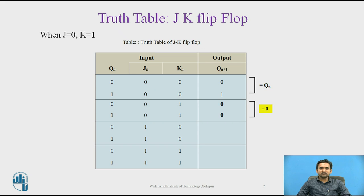When J equals 0 and K equals 1, the output of the AND gate corresponding to J becomes 0, therefore Q becomes 0. This condition will reset the flip-flop, representing the reset state.